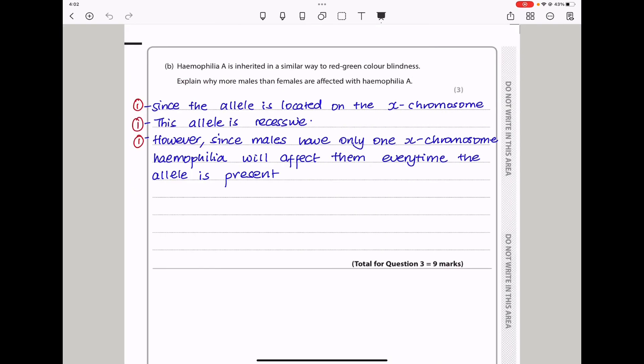Moving on. Here they say Haemophilia A is inherited in a similar way to red-green color blindness. Explain why more males than females are affected with Haemophilia A. Based on the information, we can see that Haemophilia affects both males and females. And because more males are affected than females, it should be carried on the X chromosome. Since males have only one X chromosome, when they have the recessive allele, they will have the condition.